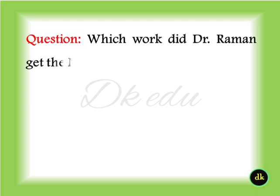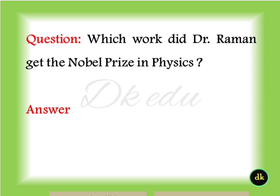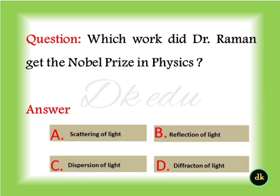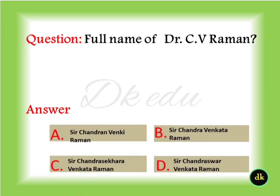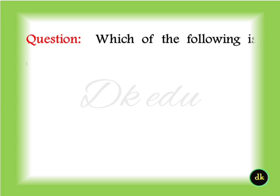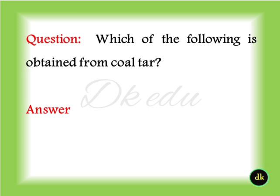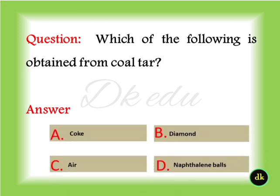For which work did Dr. Raman get the Nobel Prize in Physics? Scattering of Light. What is the full name of Dr. C.V. Raman? Sir Chandrasekhar Venkata Raman. Which of the following is obtained from coal tar? Naphthalene balls.